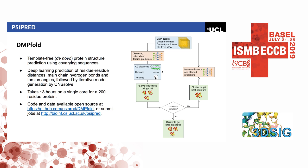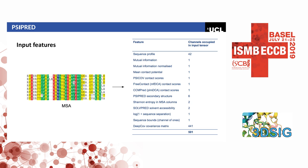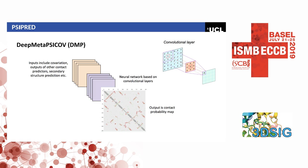All our inputs come from a multiple sequence alignment derived from a single sequence. The inputs to the method include sequence mutual information, three pre-existing contact predictors — PsyCo, FreeContact, and CCMpred — predicted secondary structure, predicted solvent accessibility, and the main philosophical input: the covariance matrix, which represents the level of co-evolution between position i and position j. Before CASP13, the thinking was that you would use these inputs to generate contacts in a protein, as typified by the deep method PSICOV which did well at CASP13.